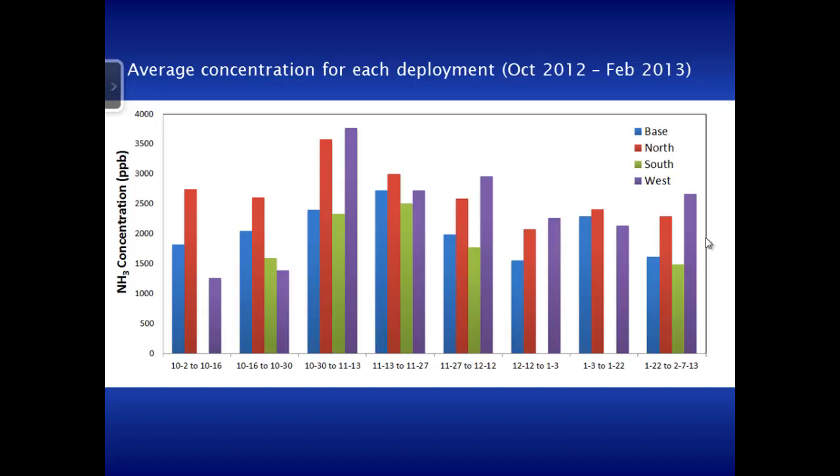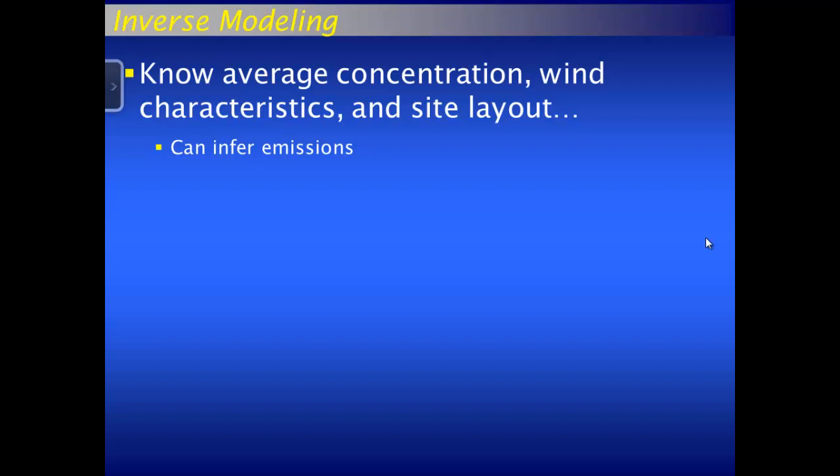Kira Shonkweiler, a graduate student in atmospheric sciences at CSU, will now discuss that. Jay gave great background on how we're obtaining the concentration data as well as the environmental data. So knowing all of that, how can we back out emissions? Because we aren't really directly measuring emissions — so we use inverse modeling.